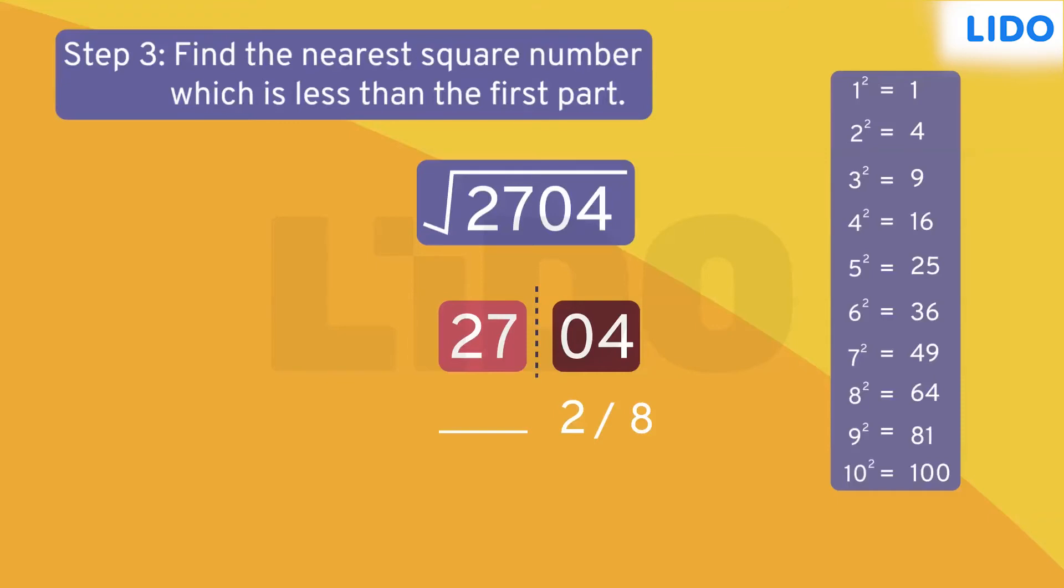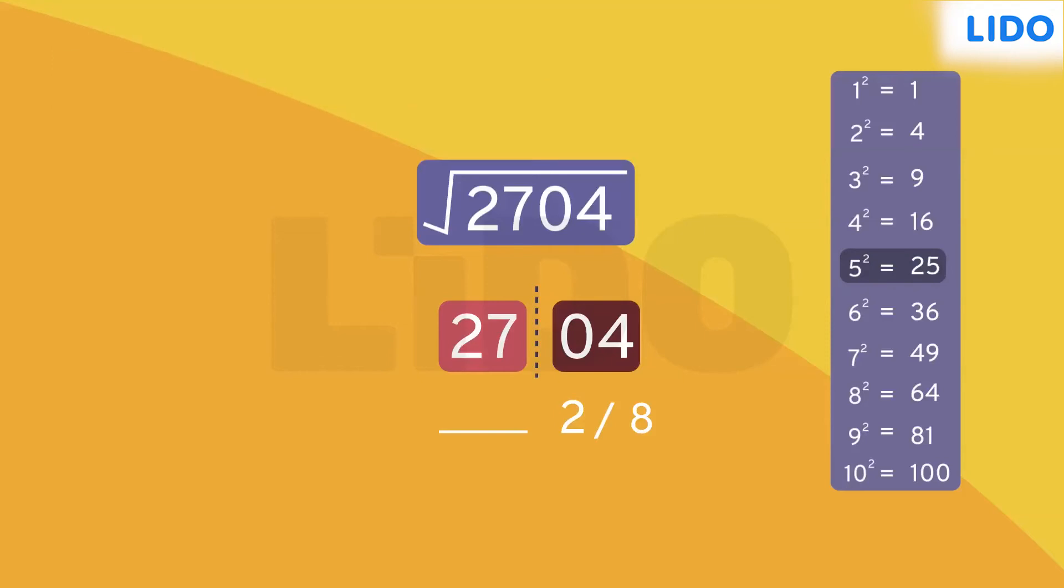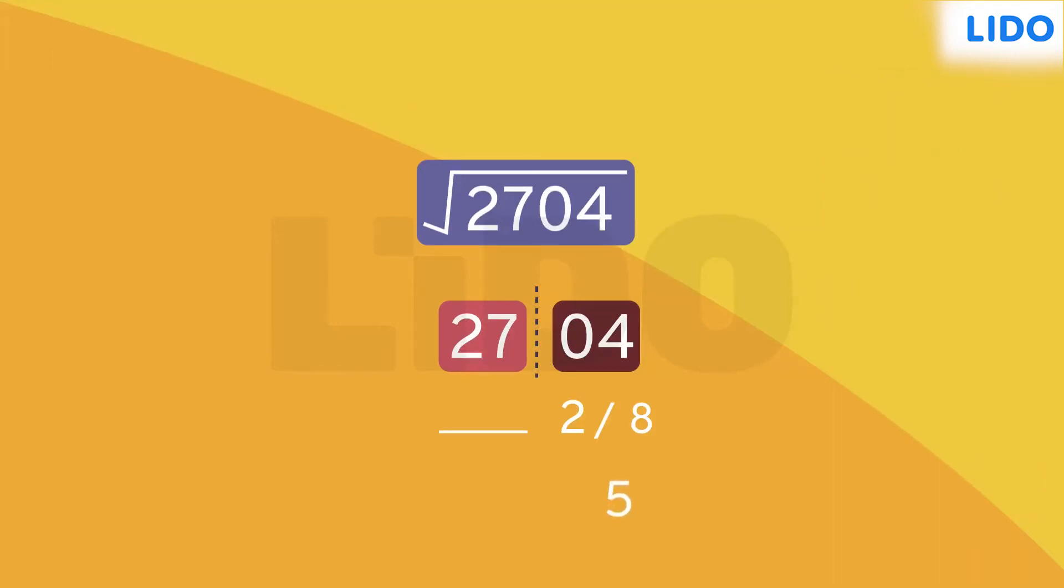The nearest square number close to 27 is 25. Square root of 25 is 5. Thus, the tens place of square root is 5.